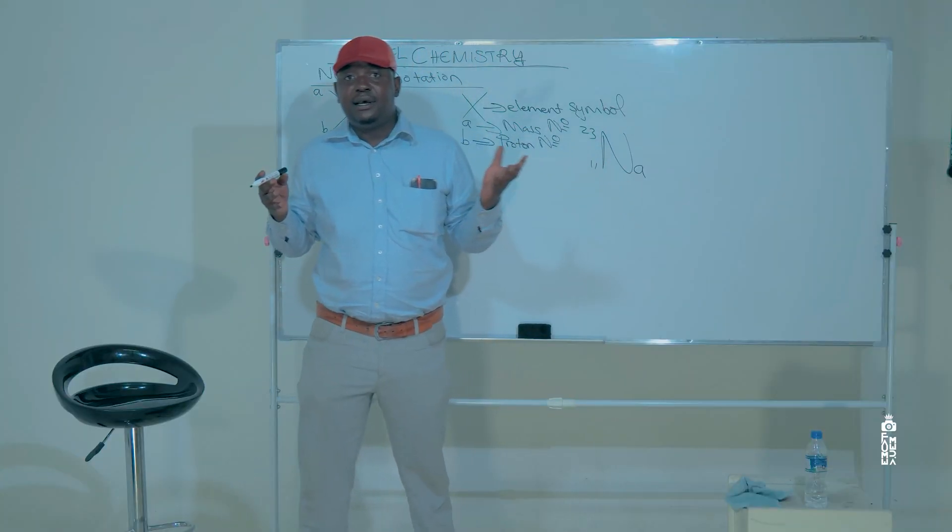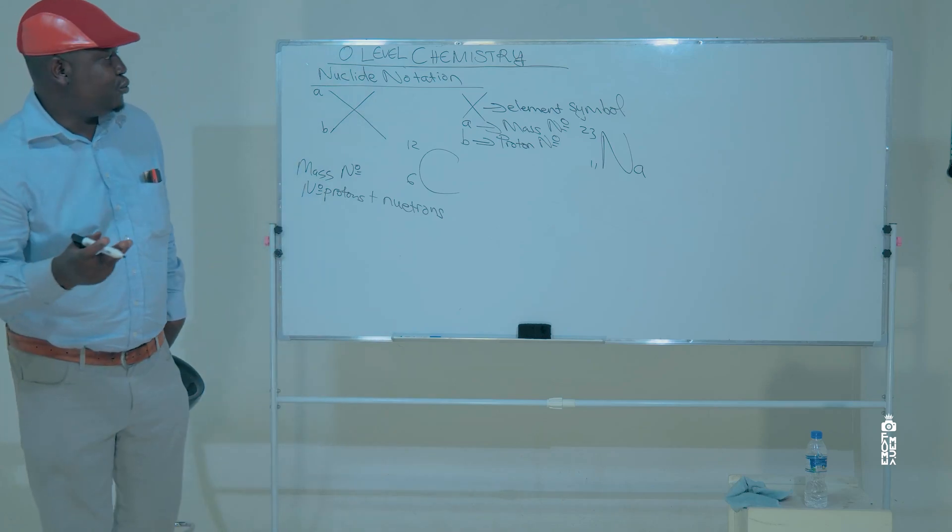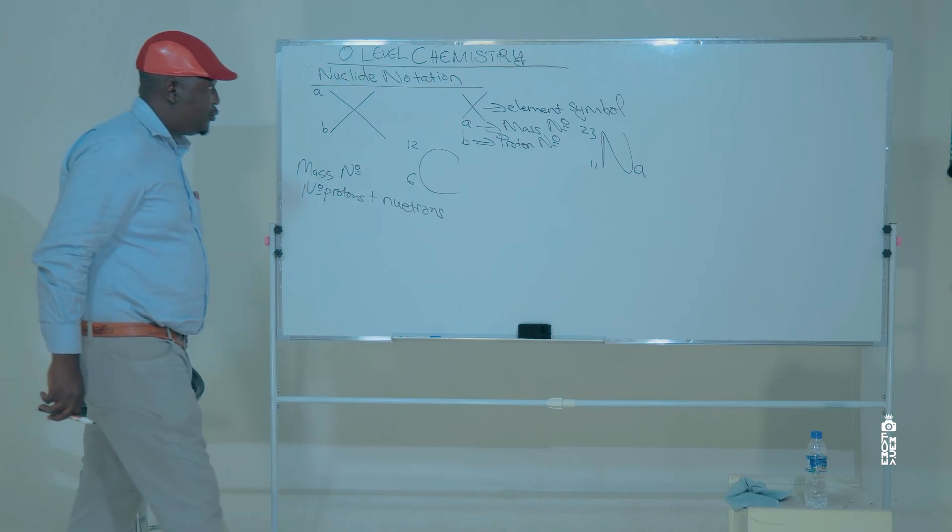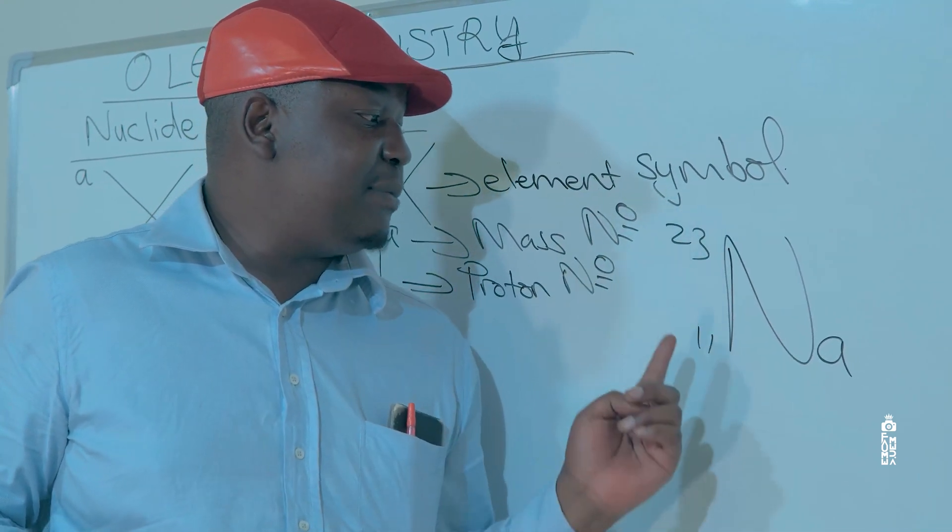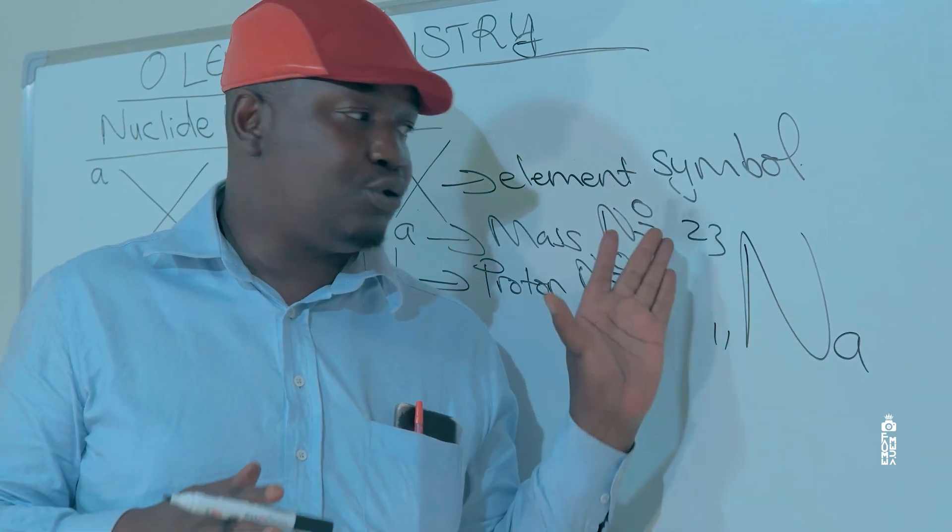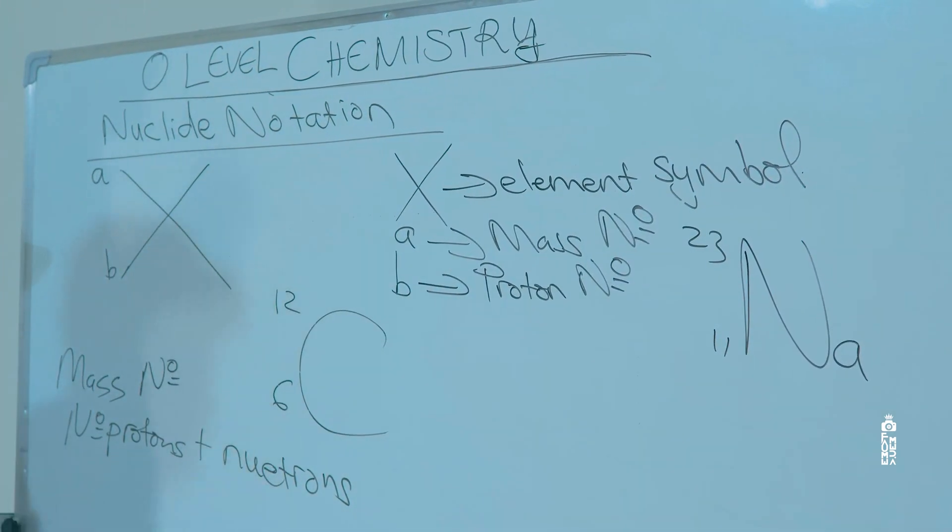So let's take, for instance, the question says, can you calculate the number of neutrons for sodium? The number of neutrons for sodium, you subtract the proton number from the mass number, which is 23 minus 11.